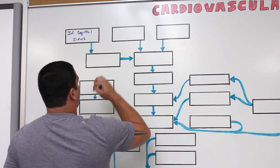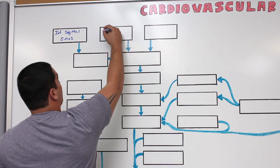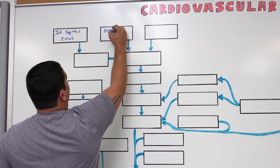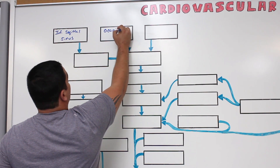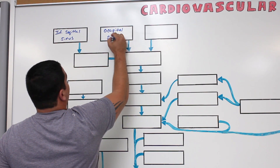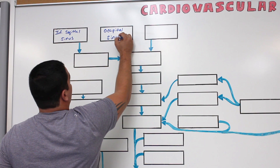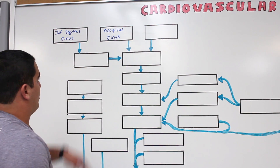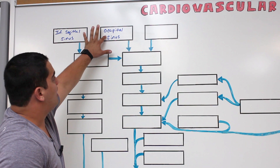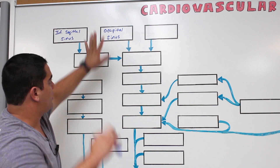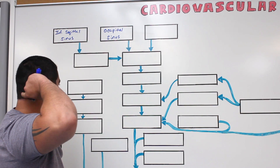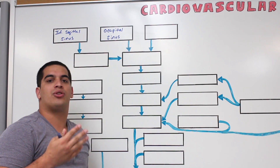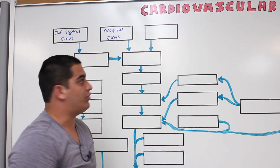Another important one runs within the inside of the skull, right within the occipital bone — this is called the occipital sinus. So we have the inferior sagittal sinus and the occipital sinus. The occipital sinus is located inside the skull right around the internal occipital protuberance.